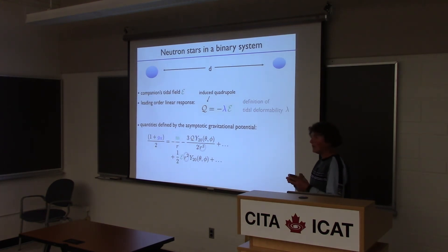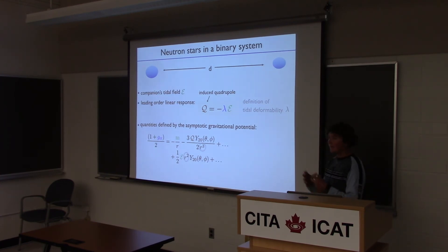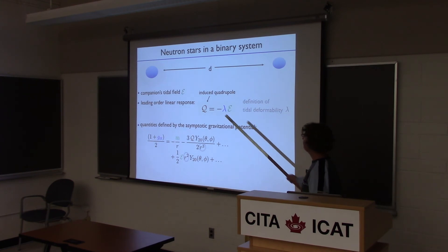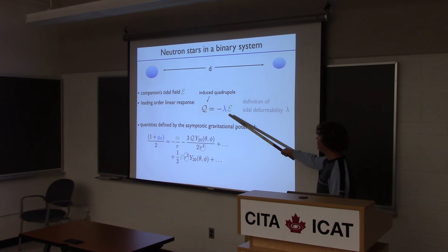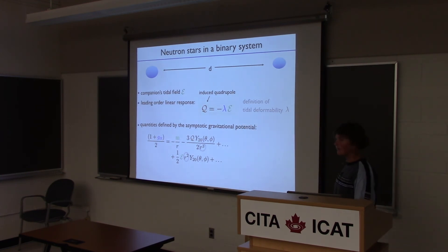If you have a neutron star in isolation, it would be pretty much spherical. But when you place it in a binary system, then it feels the tidal field from the companion because it has some finite size. In response to this tidal field, it will deform and develop a quadrupole moment. To linear order, the response of this induced quadrupole moment is linearly proportional to the amount of tidal field felt. This proportionality constant is what the tidal deformability is defined to be.